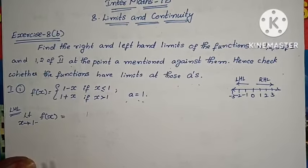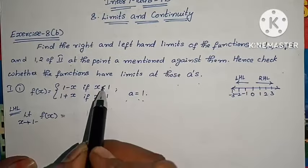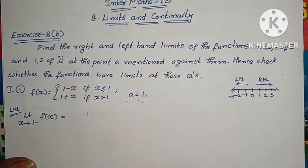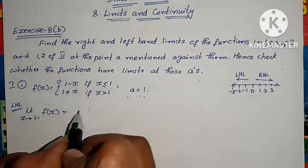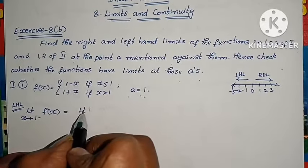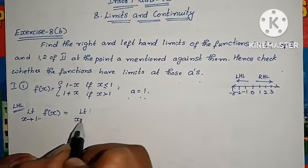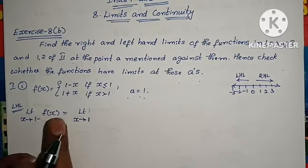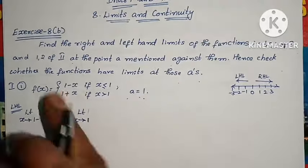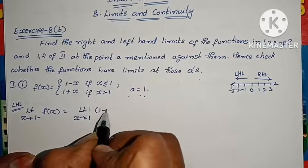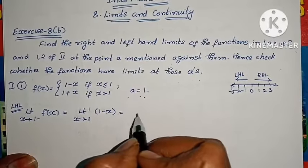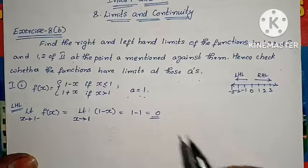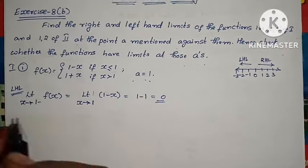Now, x tends to 1 minus means x approaches 1 from values less than or equal to 1. So the f(x) value we use is 1 minus x. Limit x tends to 1, f(x) value is 1 minus x. Substituting x equals 1: 1 minus 1 equals 0. So LHL equals 0.